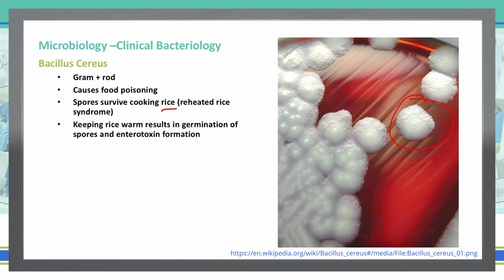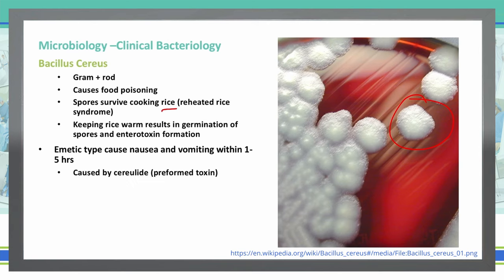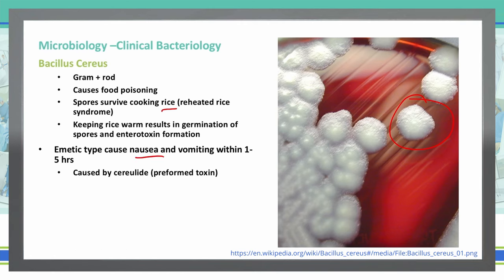There are two different types of Bacillus cereus infections that we can have: the emetic type and the diarrheal type. The emetic type is what causes nausea and vomiting specifically, and that's typically within one to five hours of ingestion of those spores. This is caused by the cereulide preformed toxin.